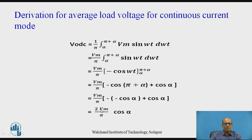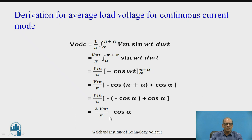The difference between this converter and the earlier full-wave converter using a centre-tap transformer is: first, this bridge controlled rectifier does not require a centre-tap transformer, while the earlier one does. Second is PIV — peak inverse voltage. The PIV of the earlier circuit using a centre-tap transformer is 2Vm, whereas the PIV for this bridge circuit is Vm. So that is the difference between the two.